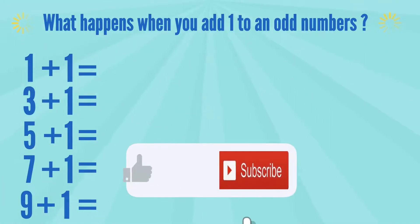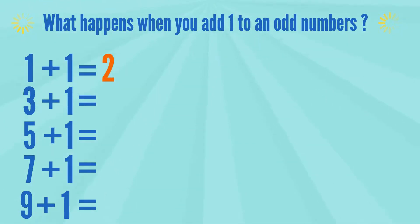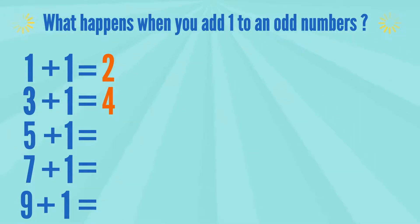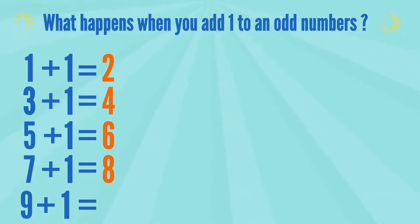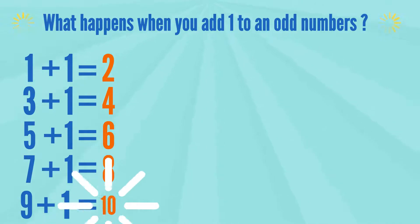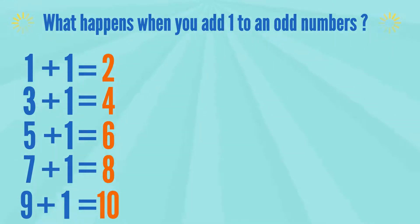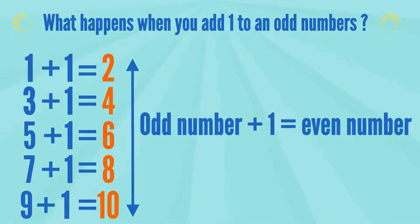Adding 1 to an odd number: 1 plus 1 equals 2. 3 plus 1 equals 4. 5 plus 1 equals 6. 7 plus 1 equals 8. And 9 plus 1 equals 10. That means an odd number plus 1 equals an even number.